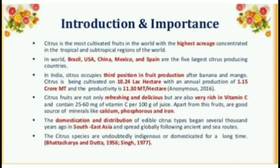Apart from this, fruits are a good source of minerals like calcium, phosphorus and iron. The domestication and distribution of edible citrus types began several thousand years ago in Southeast Asia and spread globally following ancient land and sea routes. The citrus species are undoubtedly indigenous or domesticated for a long time.